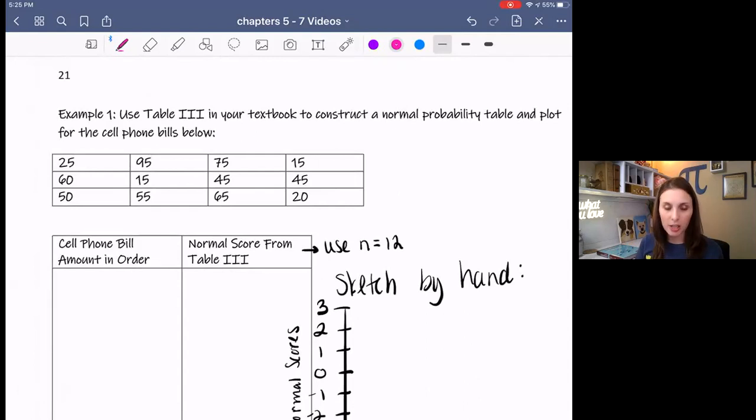So basically, I have an example here in your textbook. If you have at the front of the textbook, it's kind of like a glossy fold out thing in table three, it has your normal scores and what this is, what these values are, they represent a normal population and it's basically approximations of the Z scores. If you were to pull out a sample size of N, whatever N is. So in this case, N is the sample size. In this case, it's 12. We have 12 pieces of data in this example. So you would go to table three in your textbook and locate N equals 12 and go down and I'll show you in a second.